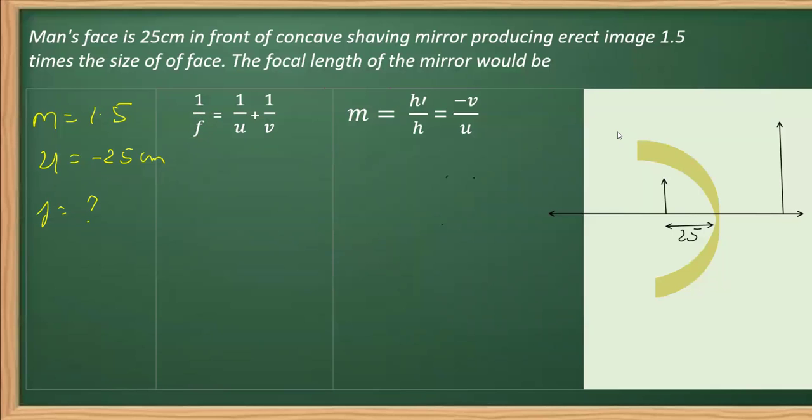We will be using this relation: magnification is equal to minus V over U. If we use this relation, that will give us the value of V, and once we get V, we will plug in the mirror formula to get the value of F.